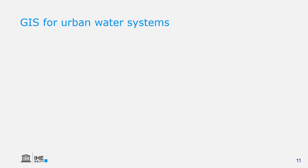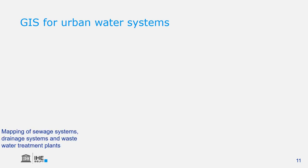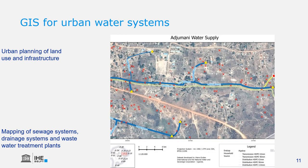For urban water systems, GIS is very important to map sewage and drainage systems, plan wastewater treatment plants, and account for land use change in relation to infrastructure. Here on this map we see a water supply network of Ajumani in Uganda — these kinds of maps are very important for utilities.